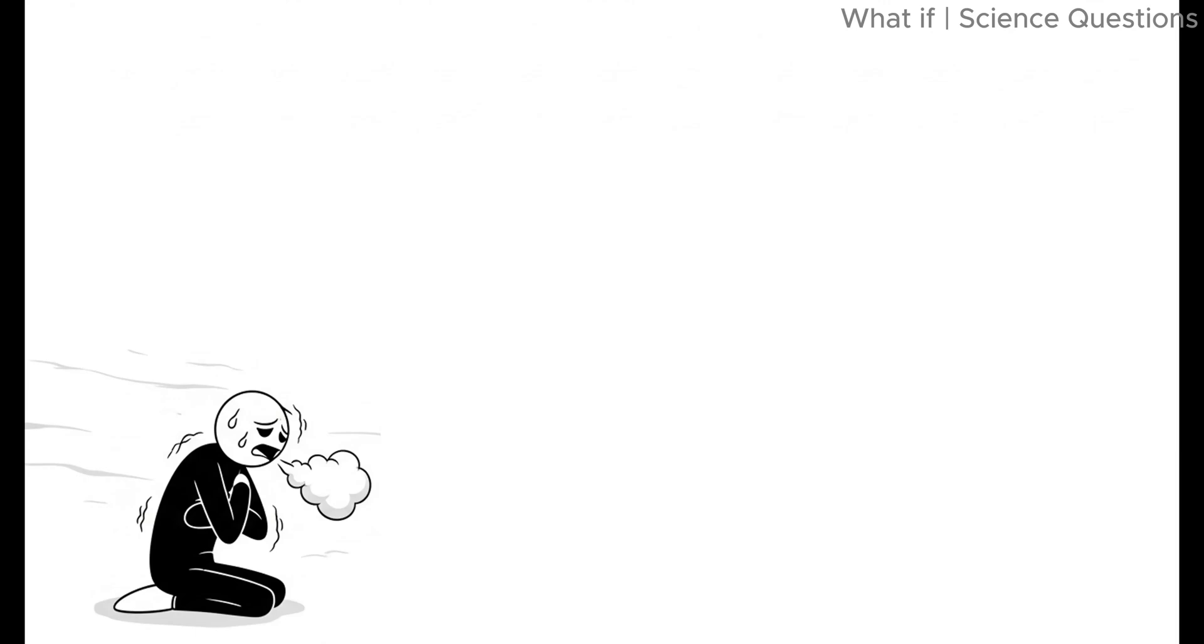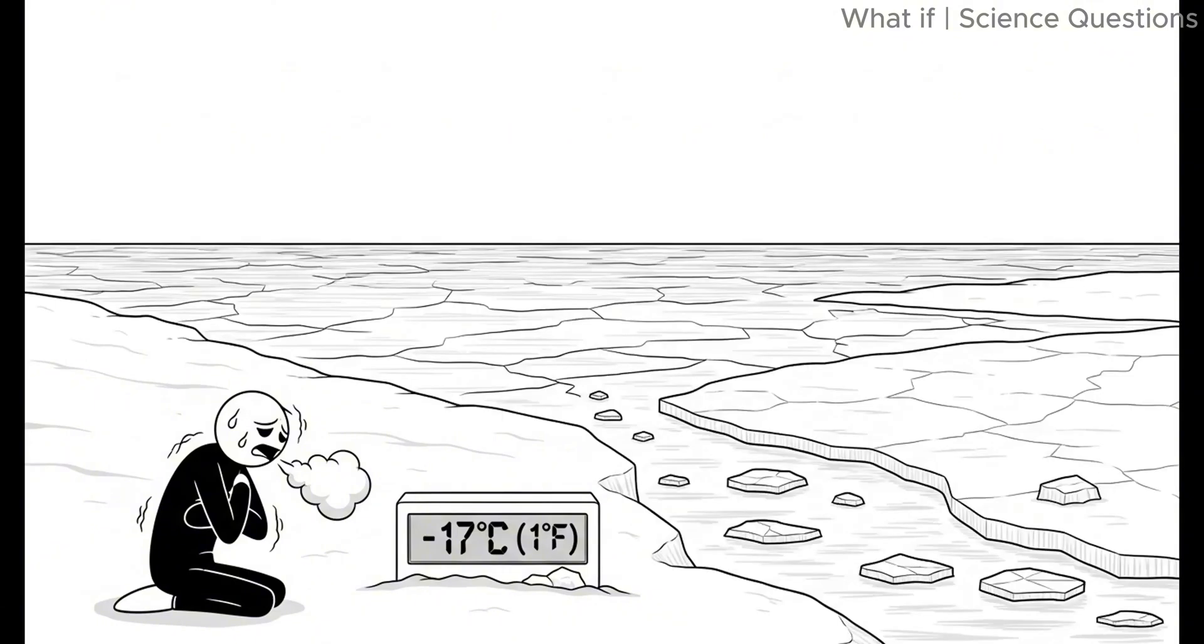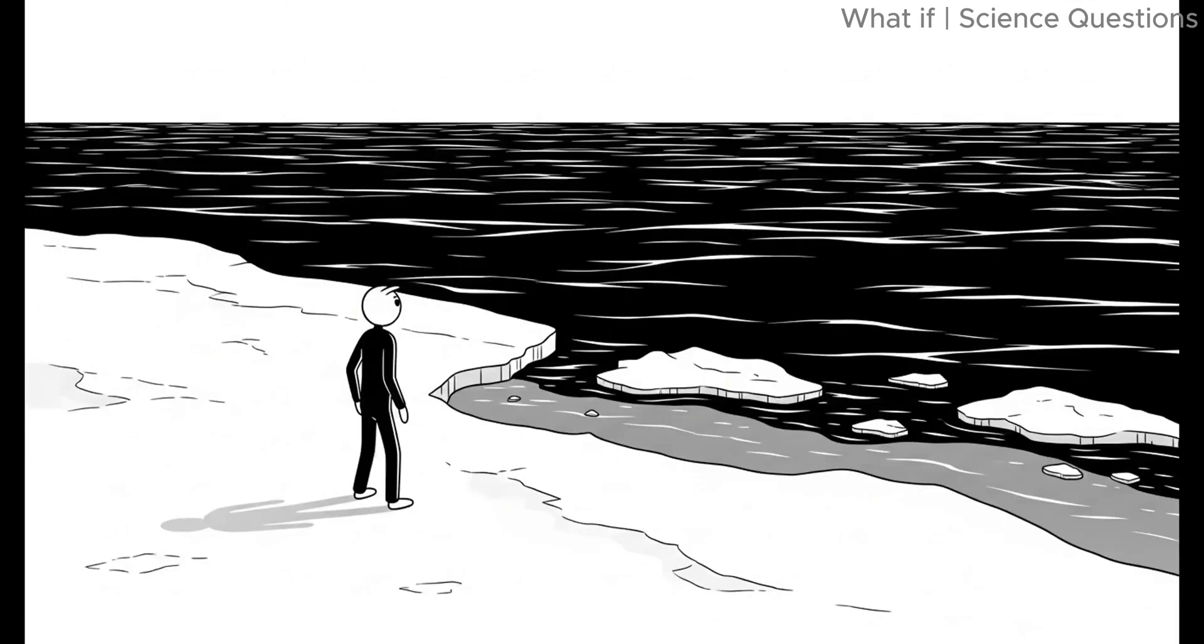The first week. Now, things get serious. Temperatures plummet to minus 17 degrees Celsius, one degree Fahrenheit, after just one week. Lakes and rivers begin to freeze on the surface. Oceans, thanks to their massive size, stay liquid a little longer, but the top layers quickly turn into ice.